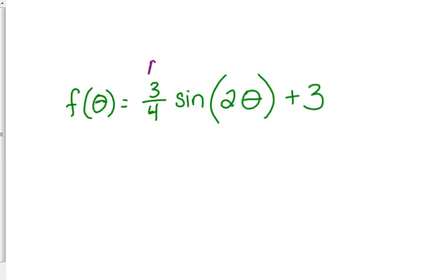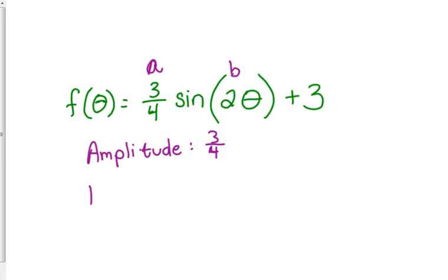Before we touch the calculator, let's talk about what's happening. A is our amplitude — we have an amplitude of three-fourths, so this is going to be a little bit shorter than the standard sine of x because we're only going up to three-fourths. B is two, so our new period is 2π divided by 2, which gives us π. It's going to be squished — one cycle completes in π units instead of 2π units. And our vertical shift D is up three.